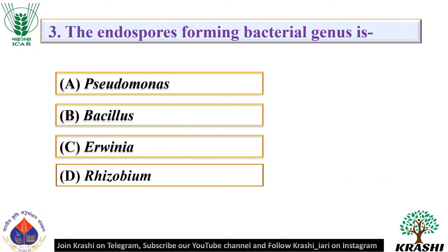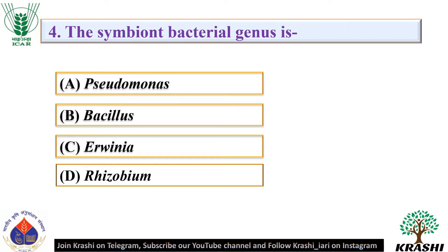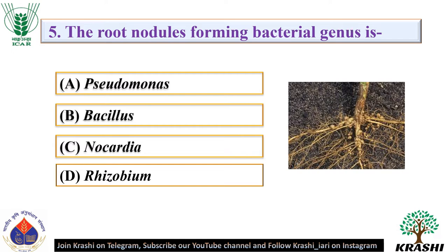Question number 3: The endospore forming bacterial genus is. The correct answer is option B — Bacillus. Endospore is a dormant, tough and non-reproductive structure produced by gram-positive bacteria. Question number 4: The symbiont bacterial genus is. The correct answer is option D — Rhizobium. Question number 5: The root nodule forming bacterial genus is. The correct answer is option D — Rhizobium.